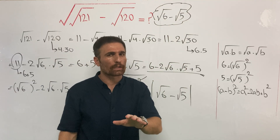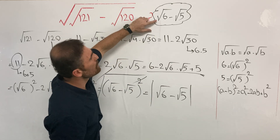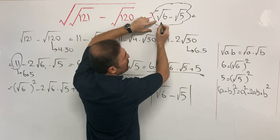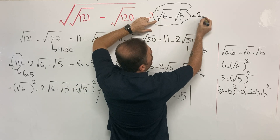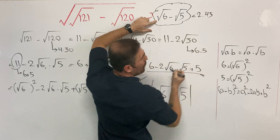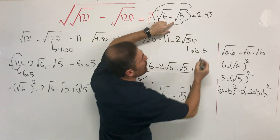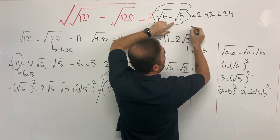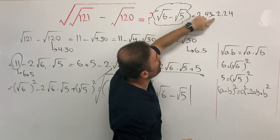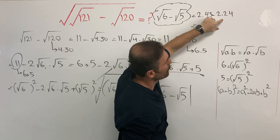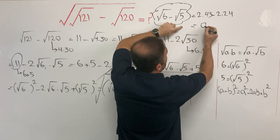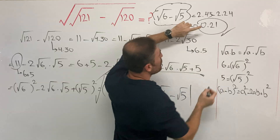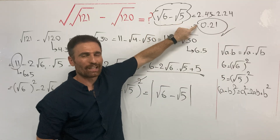But if you want to find the final numerical answer: second root of 6 is approximately 2.45, and second root of 5 is approximately 2.24. So 2.45 minus 2.24 gives us approximately 0.21, and this is our final answer.